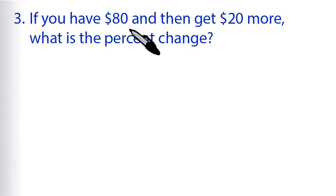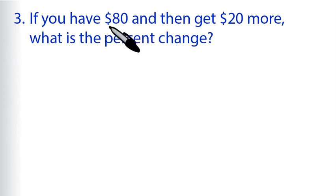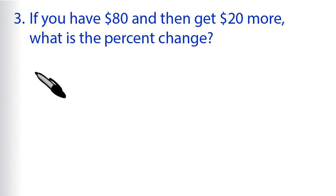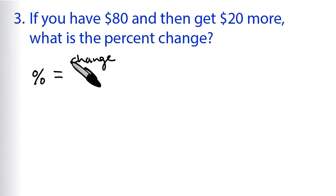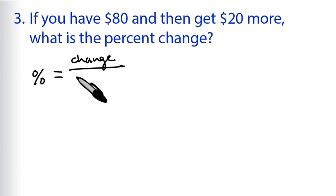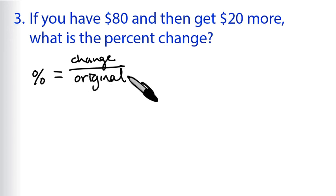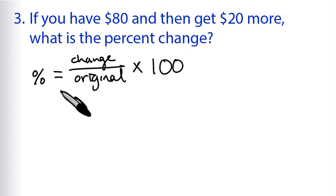Problem 3: if you have $80 and then get $20 more, what is the percent change? For this problem, we're not starting with 100 anymore, so we need to use the formula from the video. The percent change equals the absolute change divided by the original amount, multiplied by 100. In this case, the absolute change is 20, and the original amount is 80.